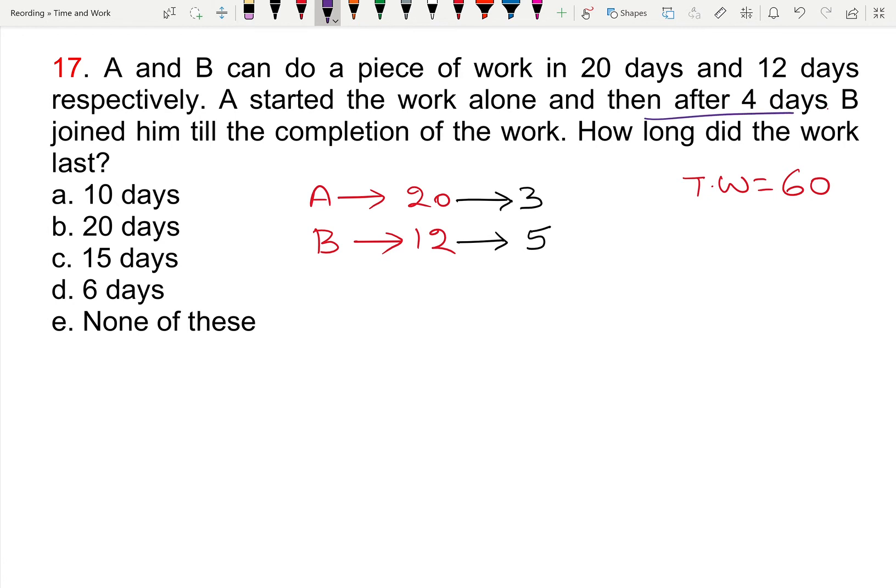4 days first. A started the work alone, and then after 4 days B joined. First 4 days, A works 4 days, 3 into 4, 12 units. So 60 units work, 12 units are done by A. 48 units remain.